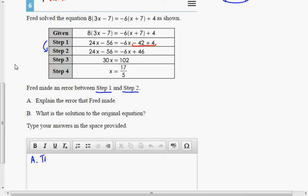The error that Fred made was he combined negative 42 and positive 4 into positive 46 instead of what it should have been, which was a negative 42 plus 4, which would be negative 38.